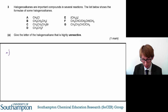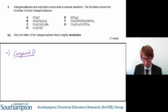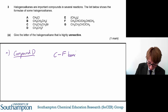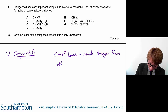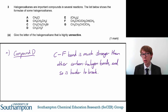Only one of these halogenoalkanes contains a fluorine atom and that is compound D. So compound D is the highly unreactive halogenoalkane. The reason for that is because the carbon-fluorine bond is much stronger than other carbon-halogen bonds and as such is harder to break. Because it's harder to break, a reaction is less likely to occur than with a compound that has an iodine atom in it.